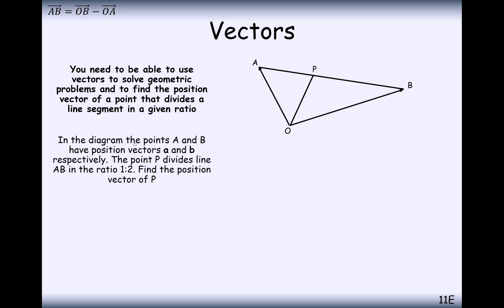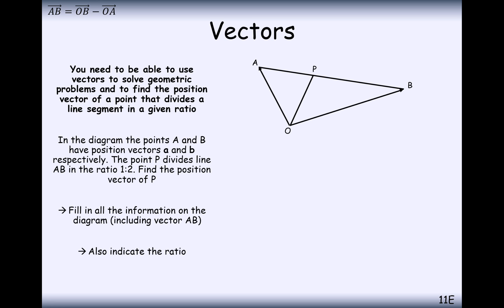In this question, in the diagram, the points A and B have vectors a and b respectively. The point P divides AB in the ratio 1 to 2. Find the position vector of P. First of all, let's label our diagram. O to A is the vector little a, and O to B is the vector little b.